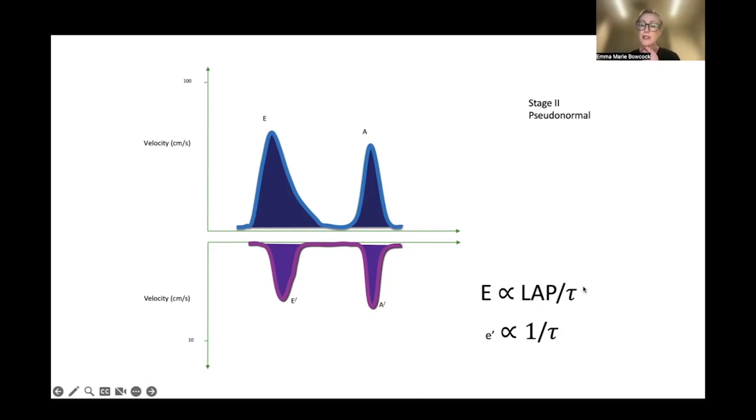It's also inversely proportional to something called tau. Tau sounds complicated but it's just the rate of pressure decay in isovolumetric relaxation. The longer your tau, the longer your LV is taking to relax. If you have a really fit athlete with a really short tau, they're relaxing quickly with a really good ventricle, so they'll have a short tau variable and a high E-wave.